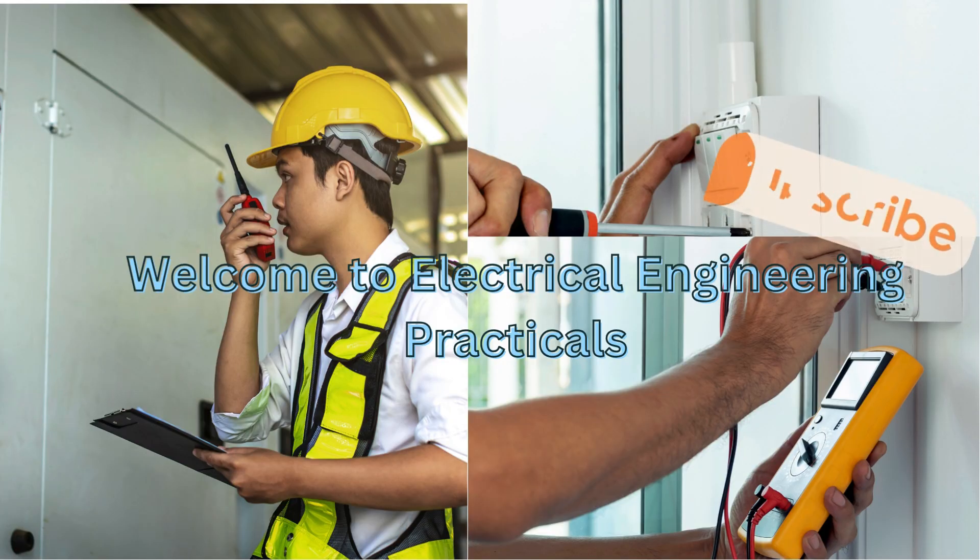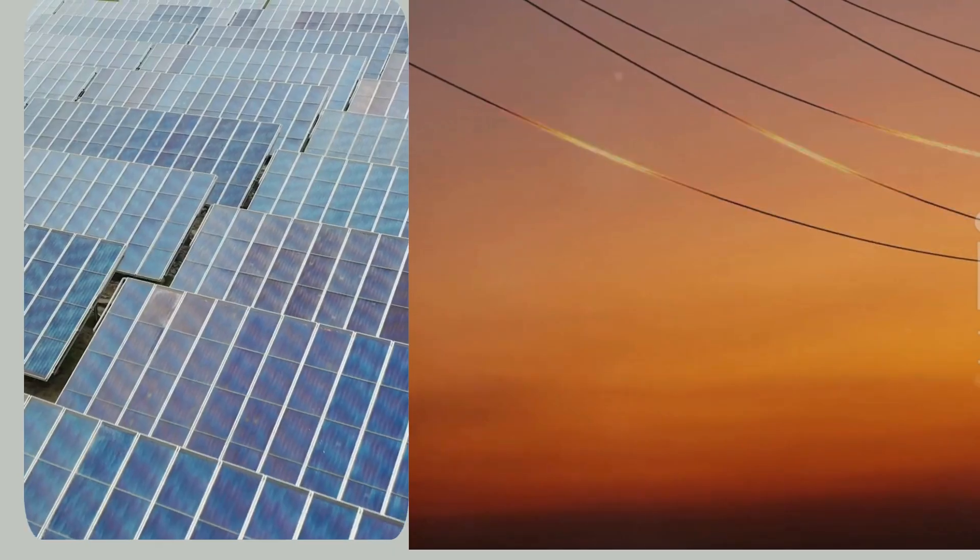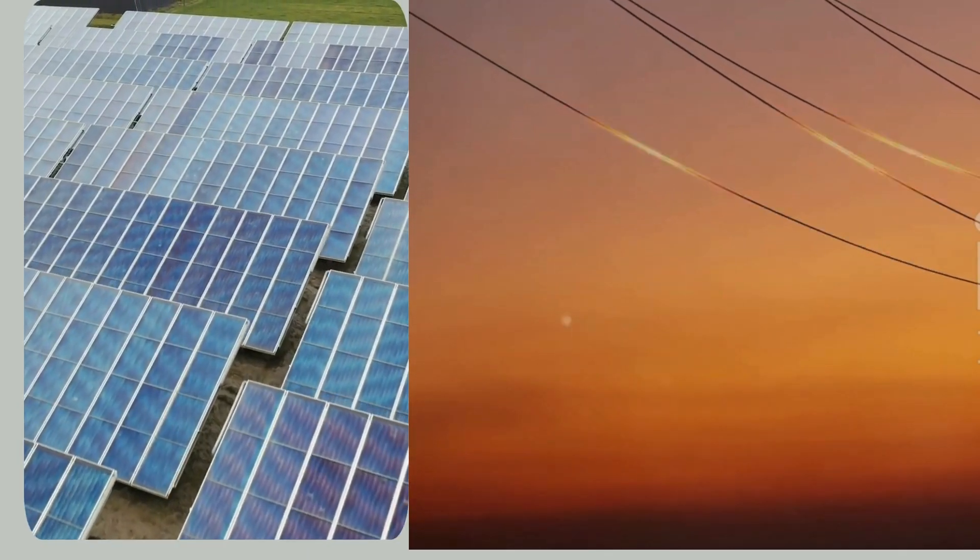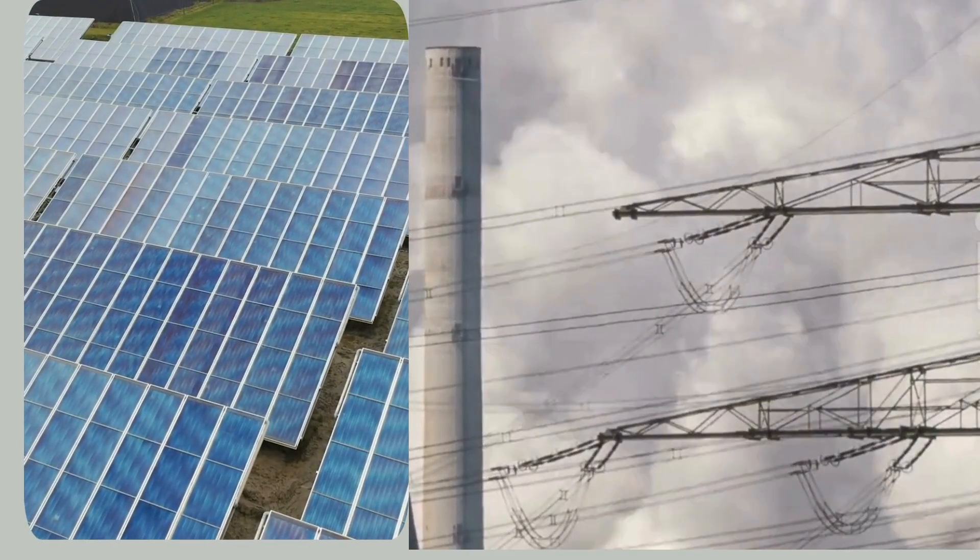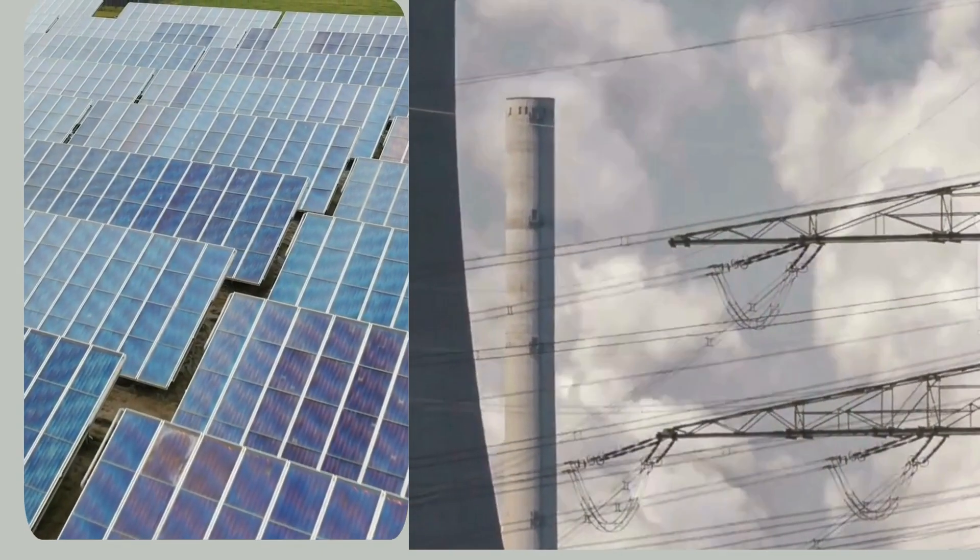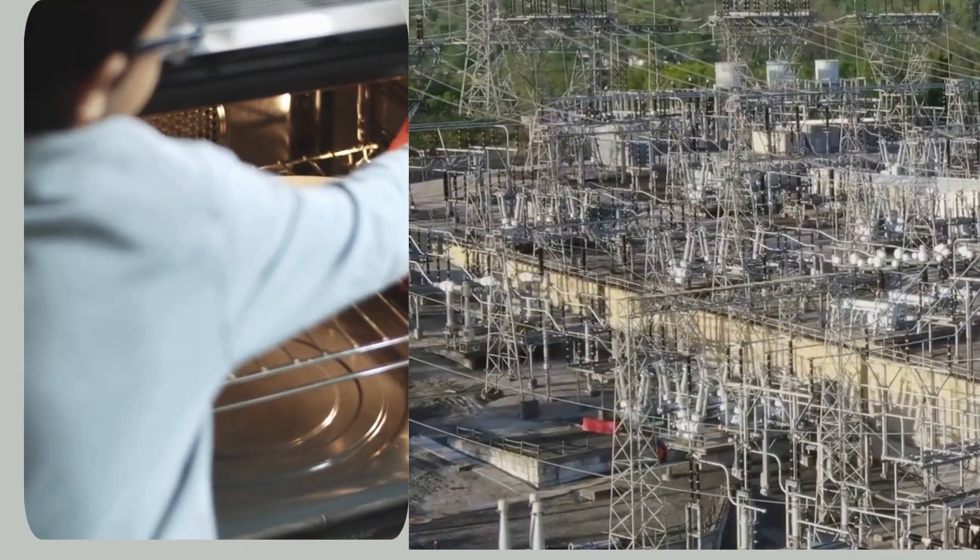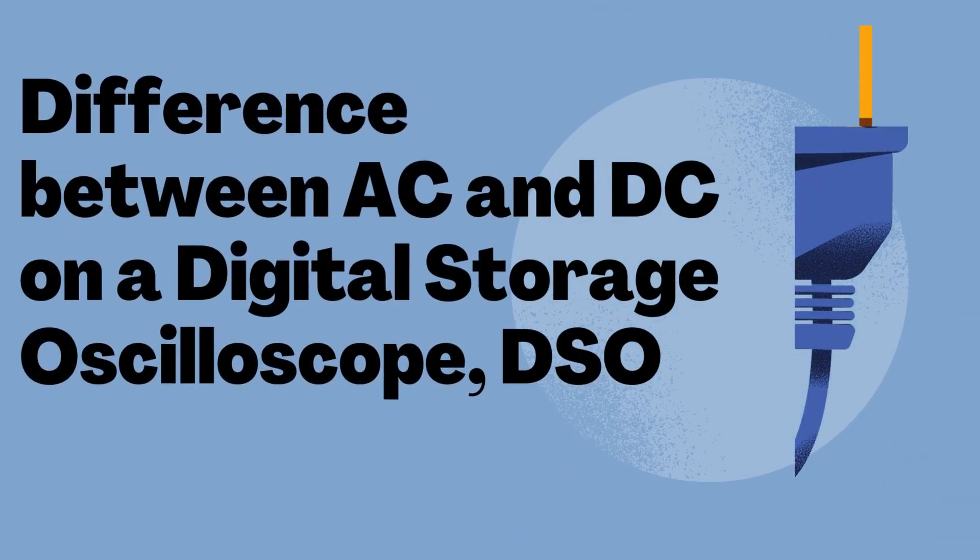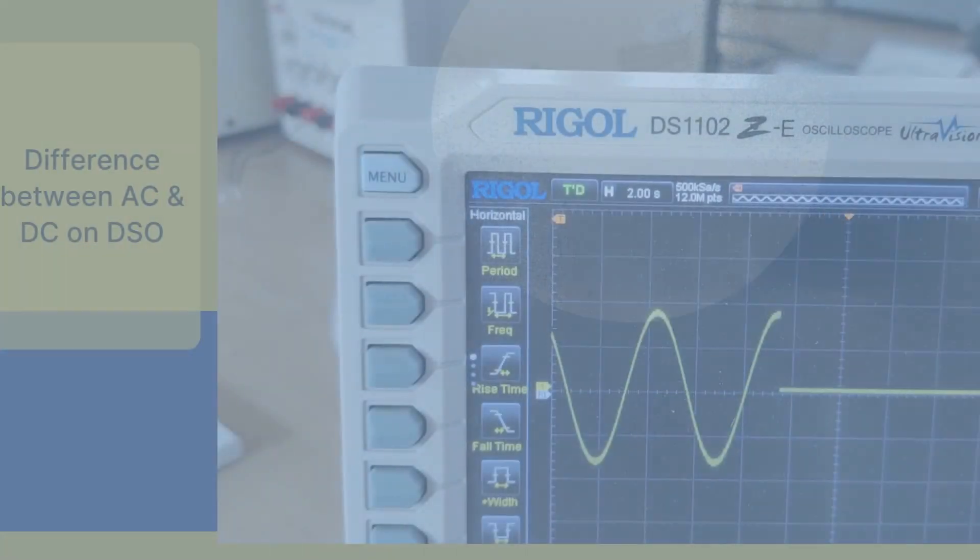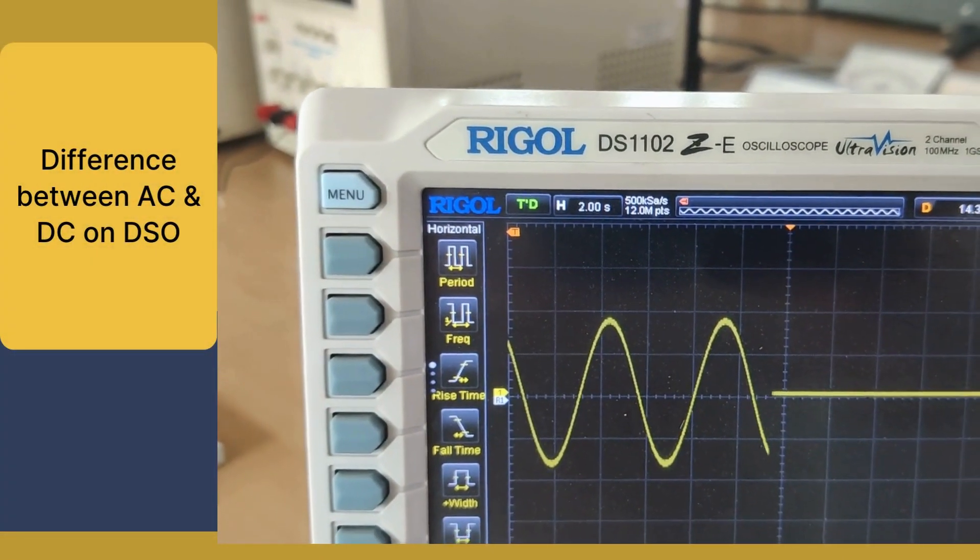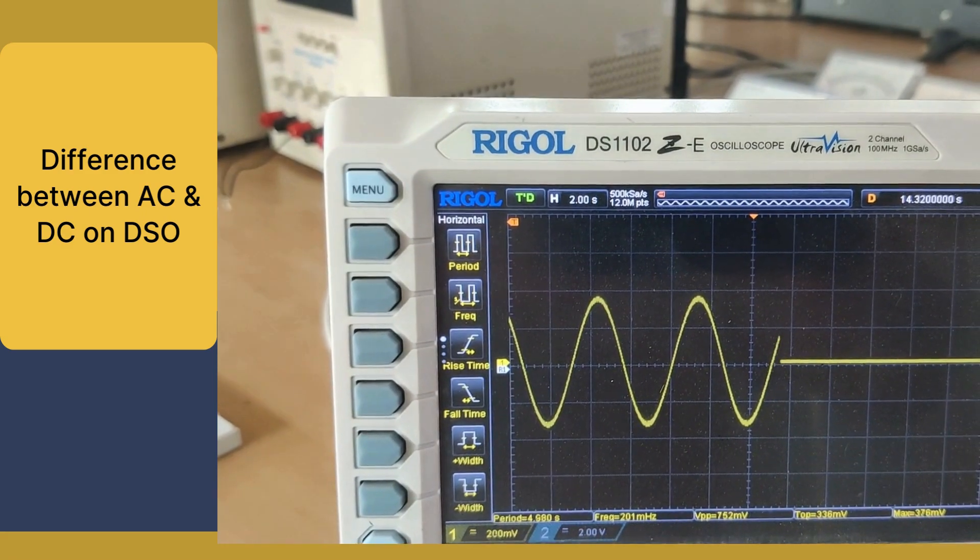Hello everyone. Today I am diving into an electrifying topic that sounds straight out of an electrical engineering textbook, but trust me, it's everywhere around you. The electrifying world of AC and DC, whether voltage or current. Today we are going to see the difference between AC and DC on a digital storage oscilloscope or DSO.